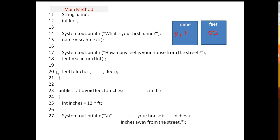And so then we want to do a method call. So right here is a method call, and we want to send some data to the other method called feetToInches. We want to send some data to there so that this method down here can use the data from the main method to do what it's supposed to do. And so we want to send the name of the person and the number of feet that their house is from the street.